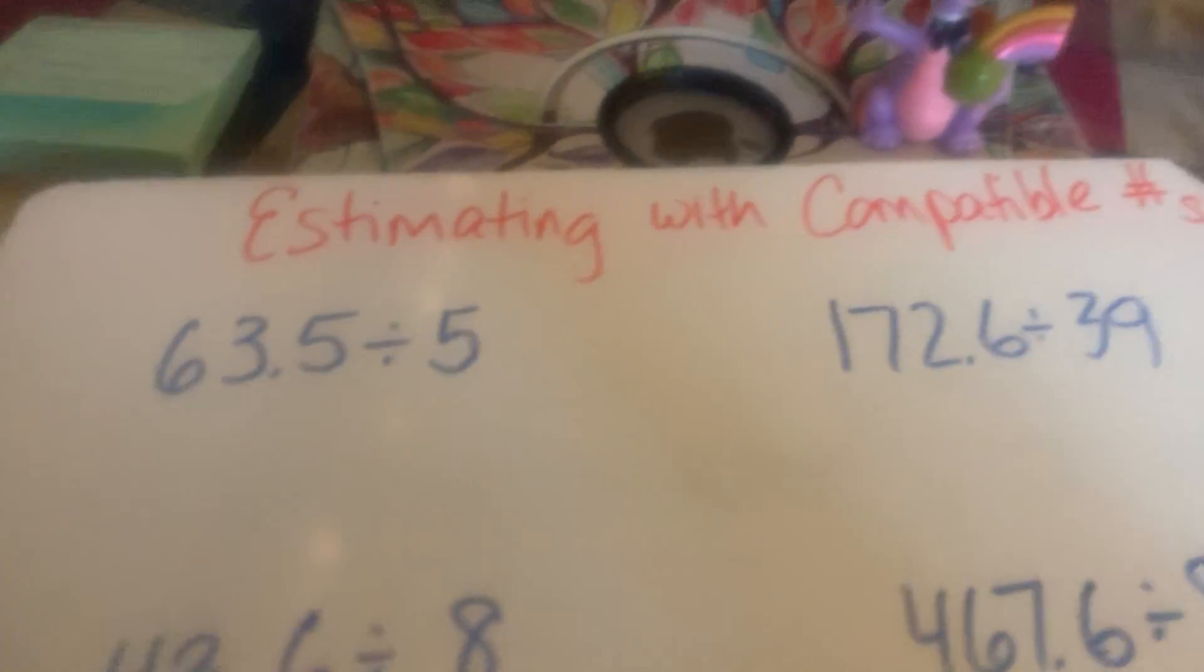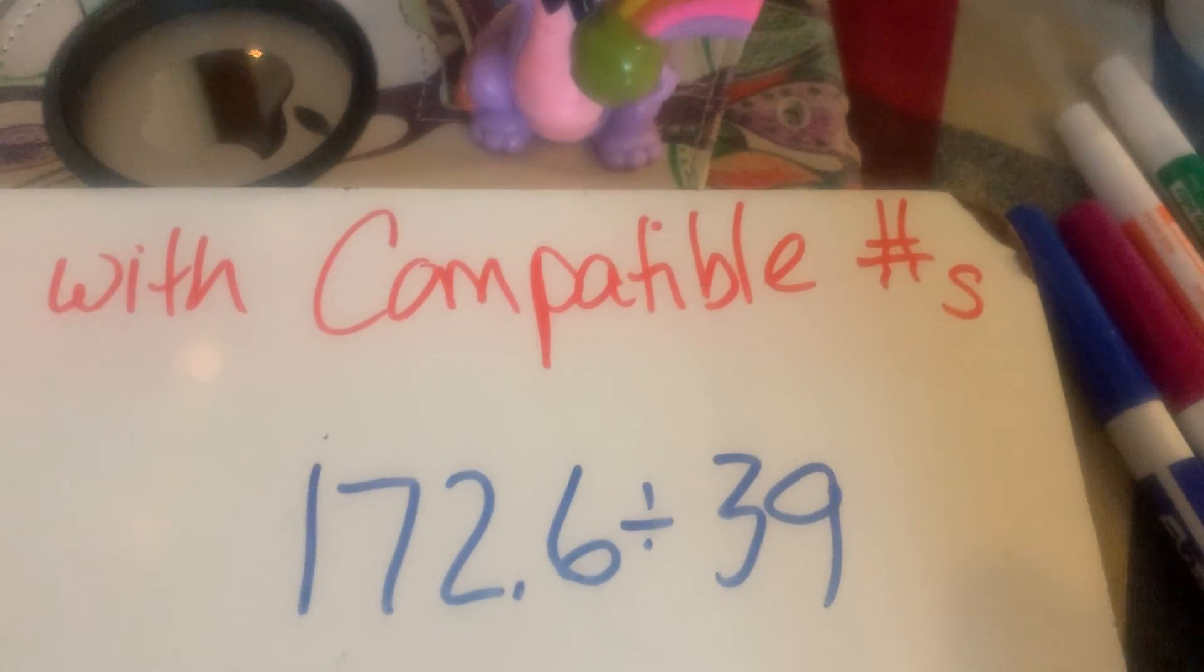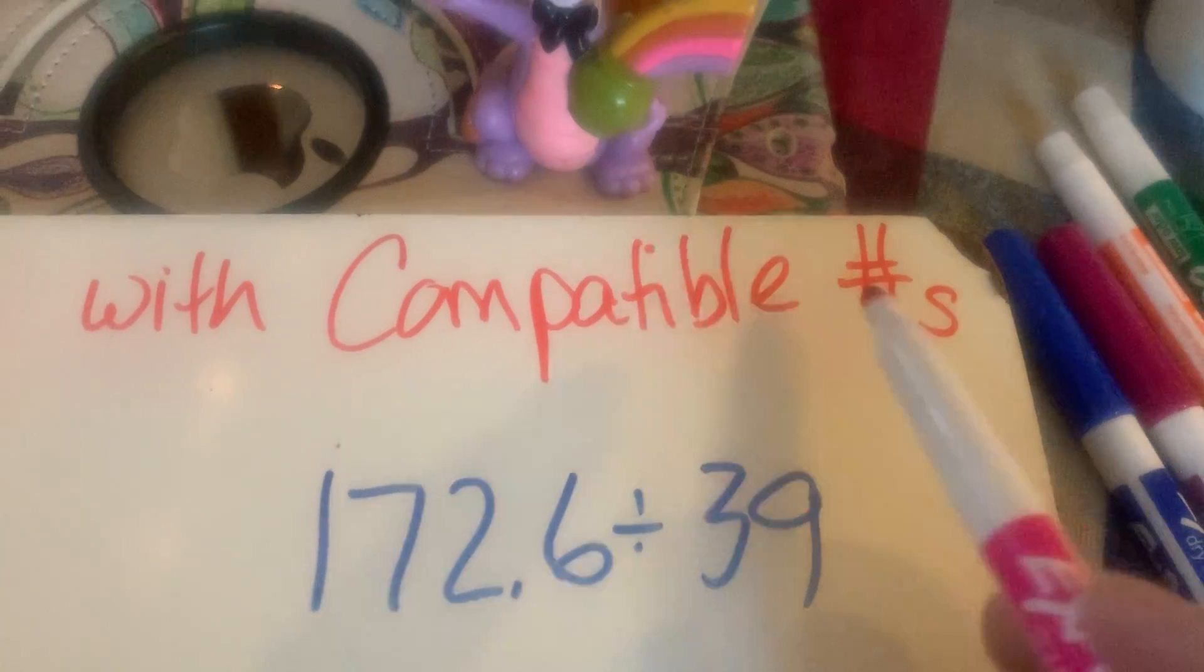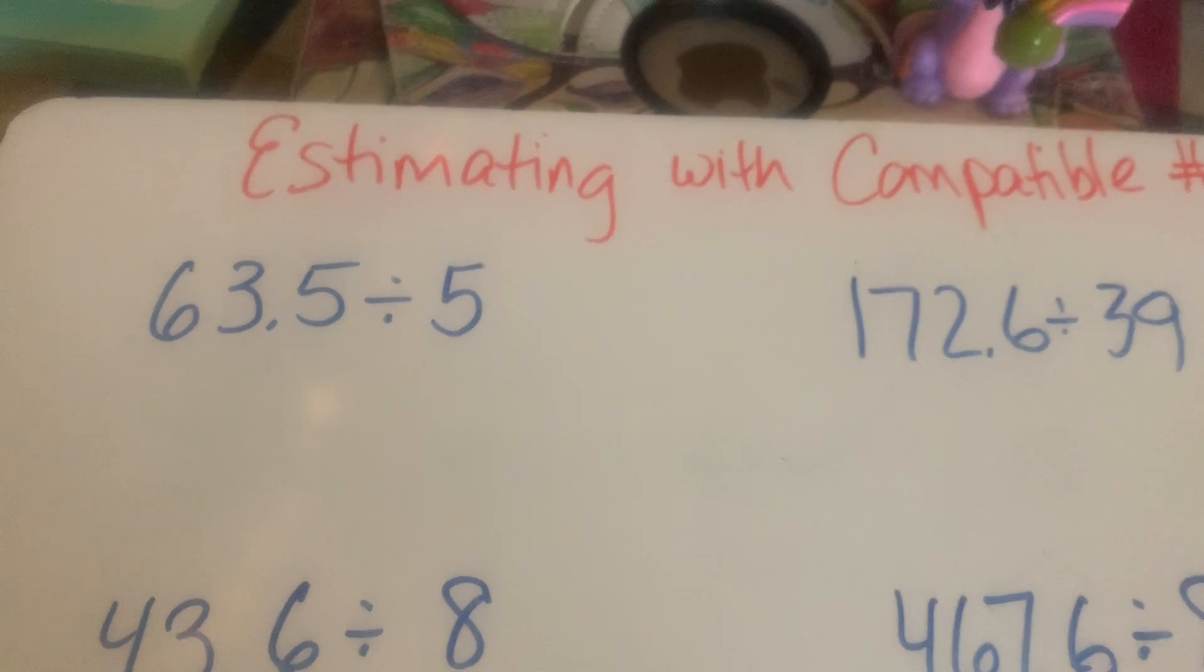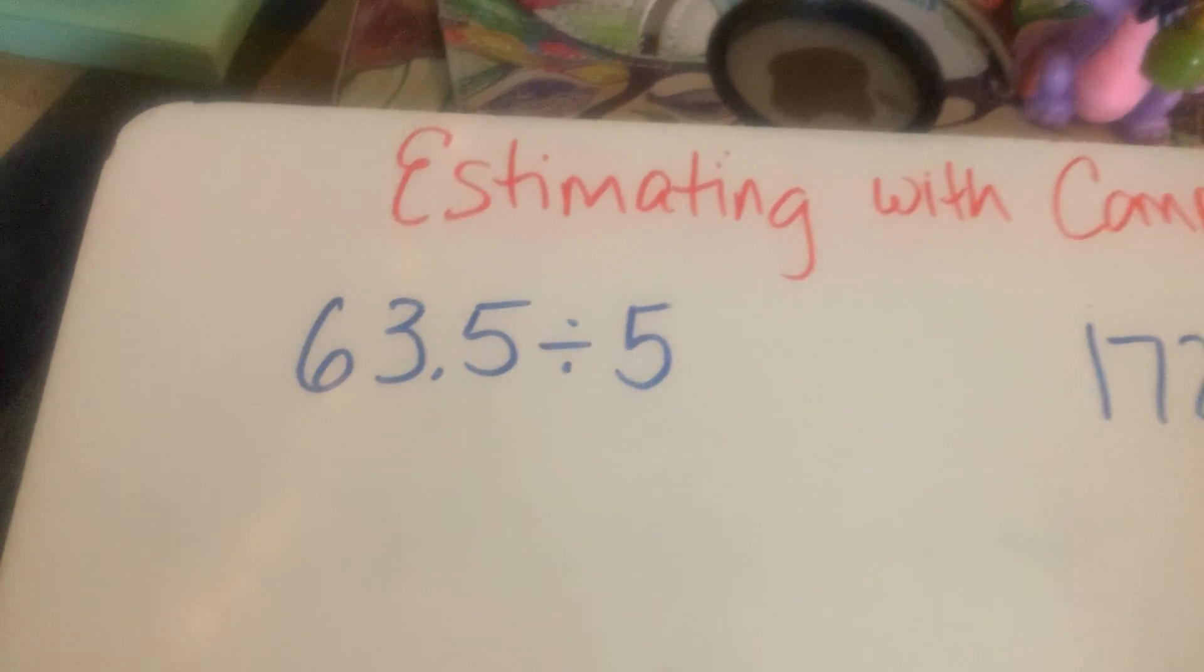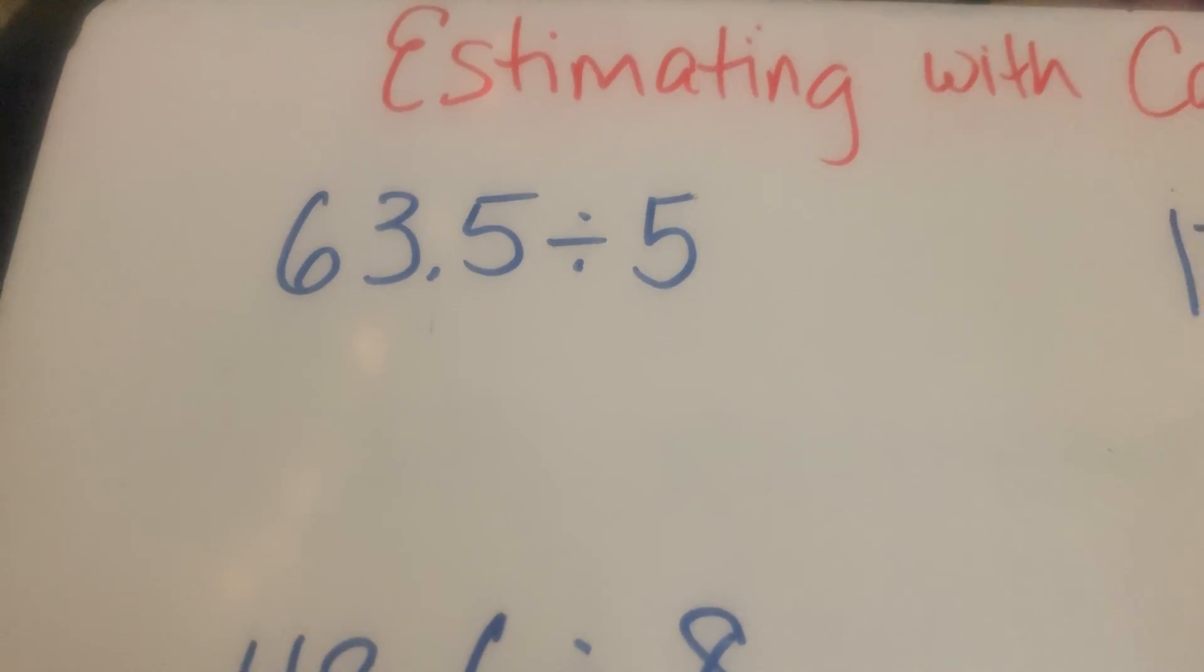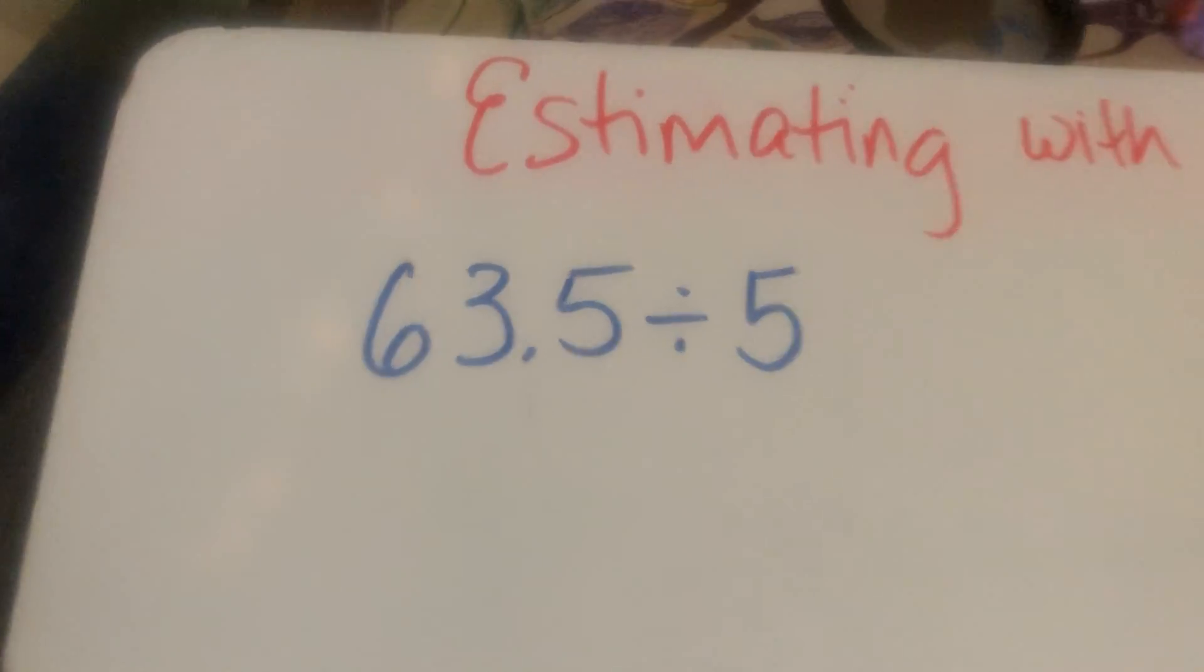When we're dividing, it's often helpful to use these things called compatible numbers, and that's not a hashtag people, it was the number sign long before it was a hashtag. Compatible means things that go together like peanut butter and jelly. I'm going to always look for those compatible numbers to make my thinking easier because our theme of the year is to work smarter not harder.